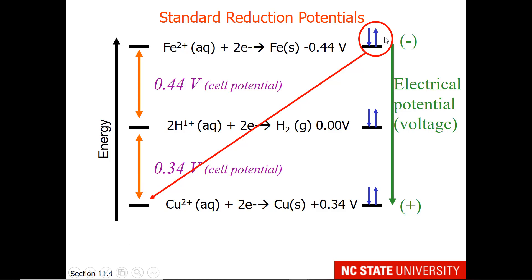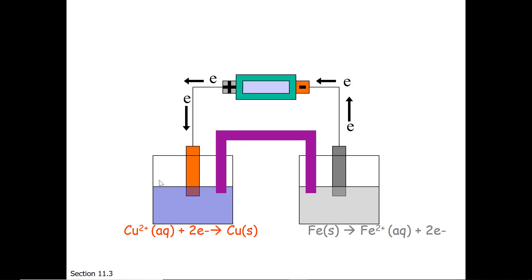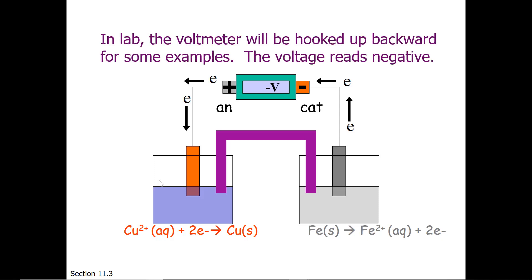Now eventually you will get to lab 11 in your Chem 102 class, and one of the things we'll have you do is hook up the voltmeter backward. This will give you the voltage with a negative reading. If you hook up the clip with the black wire to your copper, and the clip with your red wire to your iron, you will be reversing the anode and the cathode.